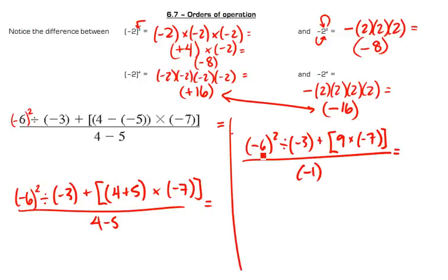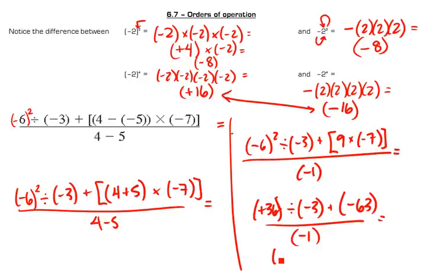Now, I can work on my exponents at the same time I'm working as that brackets. Negative 6 squared is positive 36 divided by my negative 3. Plus, in this brackets, I have 9 times negative 7, which ends up being negative 63. All that divided by negative 1. Now, I have 36 divided by negative 3 is negative 12 plus negative 63 over negative 1. And that makes it negative 75 divided by negative 1. And the answer is positive 75.